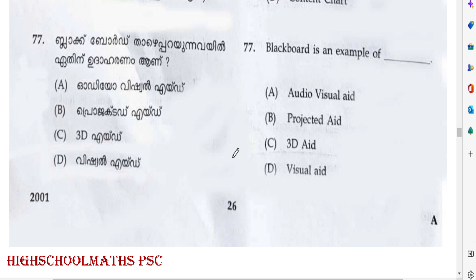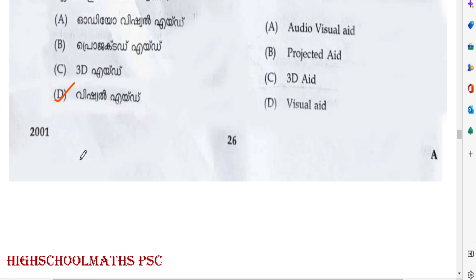Question: Blackboard is an example of which type of aid? Options: Audio Visual Aid, Projected Aid, 3D Aid, Visual Aid. Answer: Option D — Visual Aid.